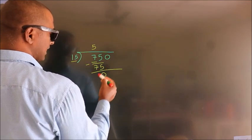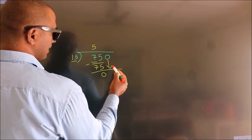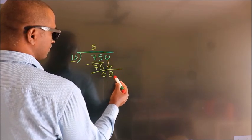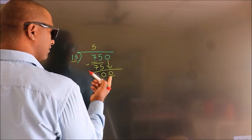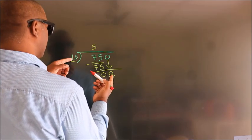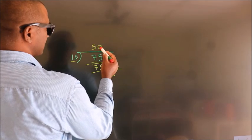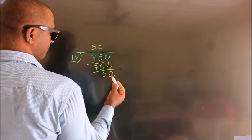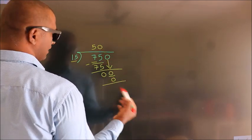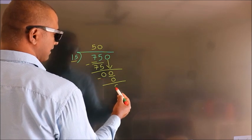After this, bring down the beside number. So bring down 0. When do we get 0 in the 15 table? 15 times 0 is 0. Now we subtract. We get 0.